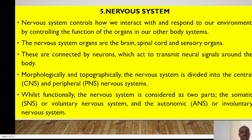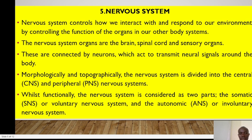The nervous system controls how we interact and respond to our environment by controlling the functions of organs in the body. The nervous system organs consist of the brain, spinal cord and sensory organs, connected by neurons. Morphologically and topographically, the nervous system is divided into the central nervous system and the peripheral nervous system. Functionally, we have the somatic nervous system or voluntary system and the autonomic nervous system. We will revisit this as we proceed with our course.